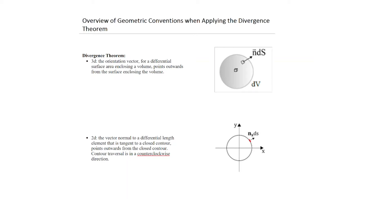A closed surface encloses the volume, and the convention when you apply the Divergence Theorem is to make sure that the surface area vector is pointing outwards from the surface. That's the only issue you need to worry about. In 2D we're talking about a closed contour that encloses an area. In this case we are always traversing the contour in a counterclockwise direction, which means the normal points outwards to your right—so we're always concerned with a normal vector pointing outwards from the contour when applying Green's Flux Theorem.